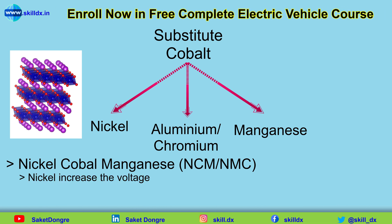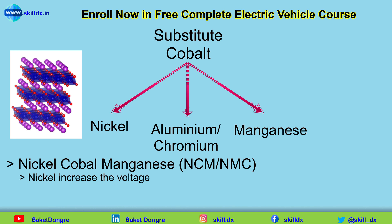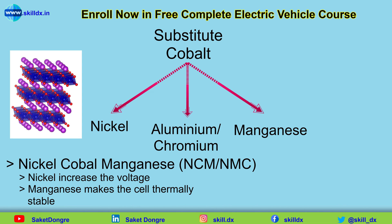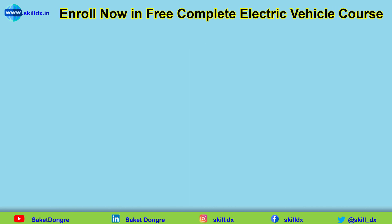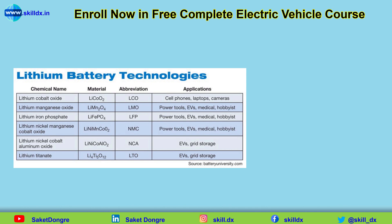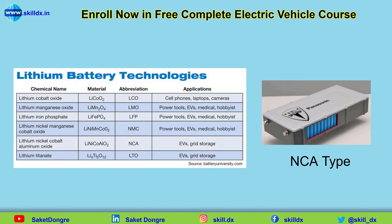In NMC, the nickel tends to increase voltage and the manganese tends to make the material more thermally stable, which is desirable. At this point in history, many automotive battery packs are made with NMC or NMC-type battery cells. Another alternative is to replace some cobalt with nickel and some with aluminium, giving an NCA battery cell — the type used in Tesla automobiles.